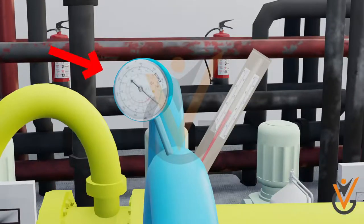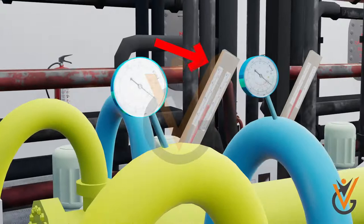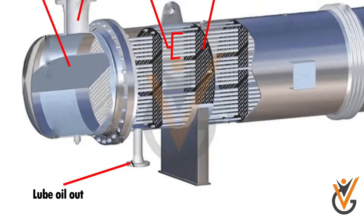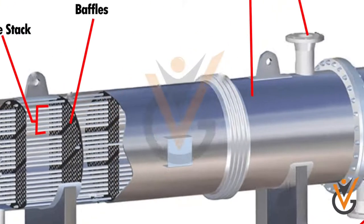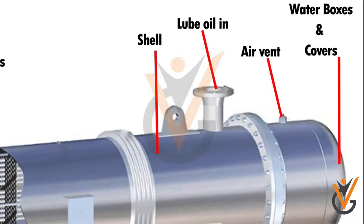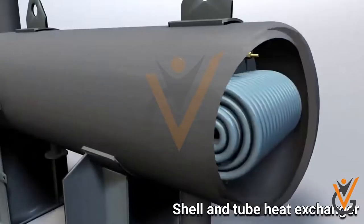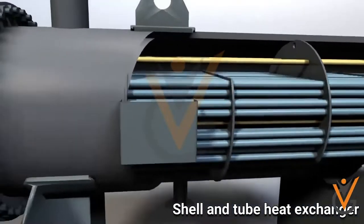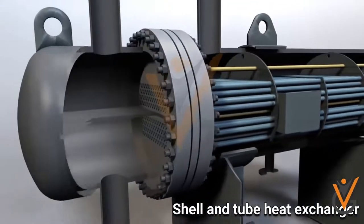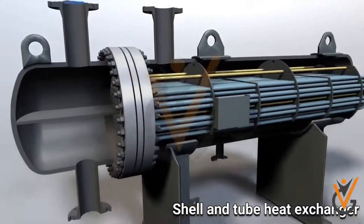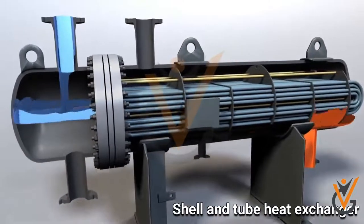Pressure gauge, temperature gauge, drain valve, air vent. Working: after absorbing heat from the main engine components, the lube oil comes to the heat exchanger for cooling, and then this lube oil is supplied back to the main engine.